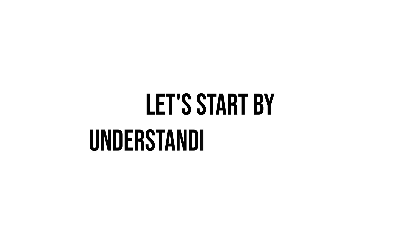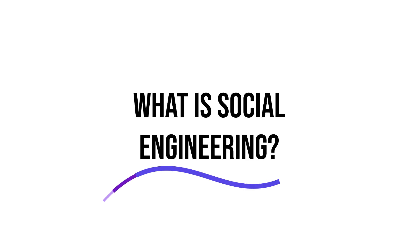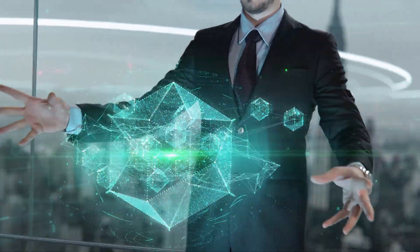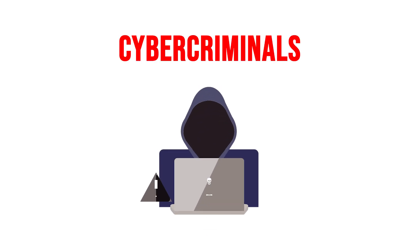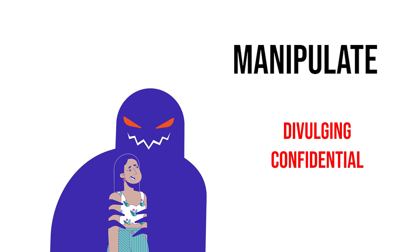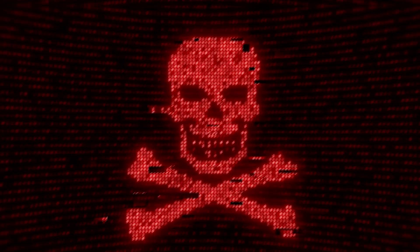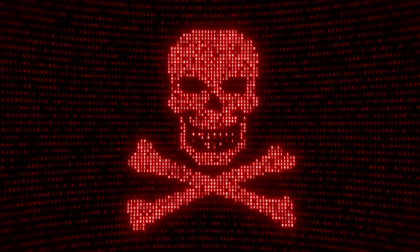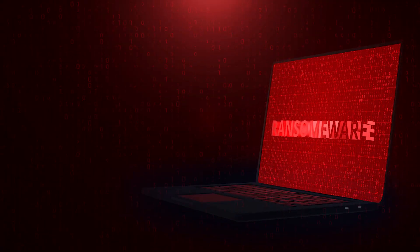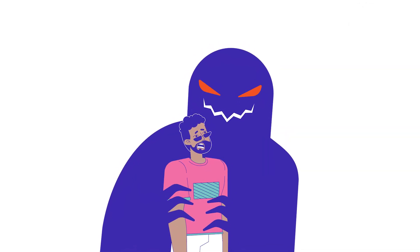Let's start by understanding the term: what is social engineering? Social engineering is a tactic used by cyber criminals to manipulate individuals into divulging confidential information, performing actions that compromise security, or bypassing security measures. Unlike traditional hacking methods that focus on exploiting technical vulnerabilities, social engineering targets human behavior and psychology.